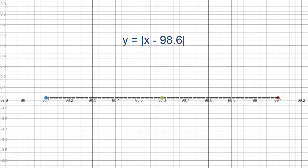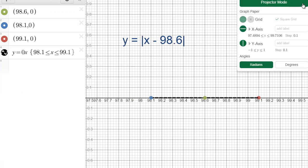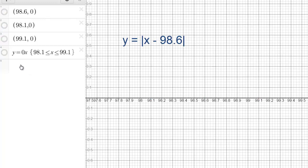Let's make some slight changes to this graph. To graph the equation, we'll substitute various values in for x and plot the points. When x is 98.6, y is 0. When x is 98.7, y is 0.1. When x is 98.8, the calculation gives y equals 0.2.